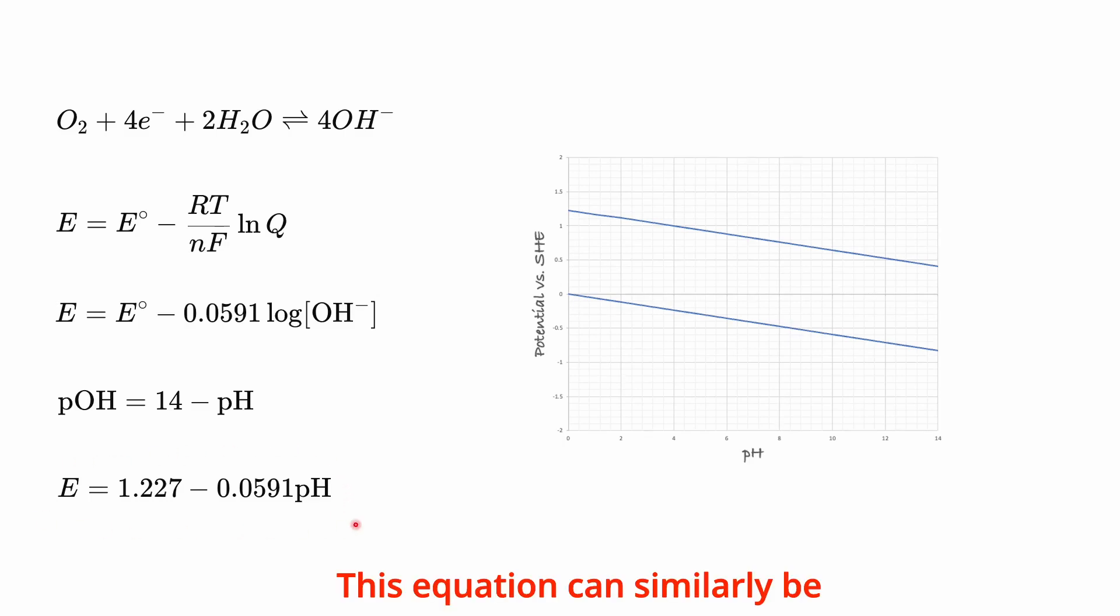This equation can similarly be plotted on a potential versus pH graph, generating a second line. Above this line, oxidation is promoted, so oxygen is stable. Below this line, the reduction reaction is favored, so hydroxide ions are stable.